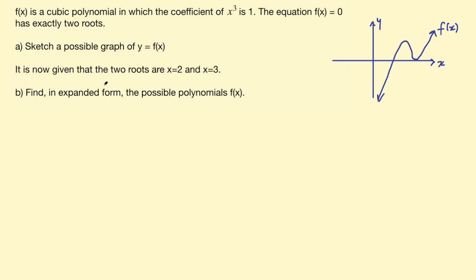The question goes on. It is now given that the two roots are x = 2 and x = 3. Find in expanded form the possible polynomials f(x). Here we can utilize the factor theorem and say that if x = 2 is a root then (x - 2) would be a factor, and if x = 3 is a root then (x - 3) will be a factor.